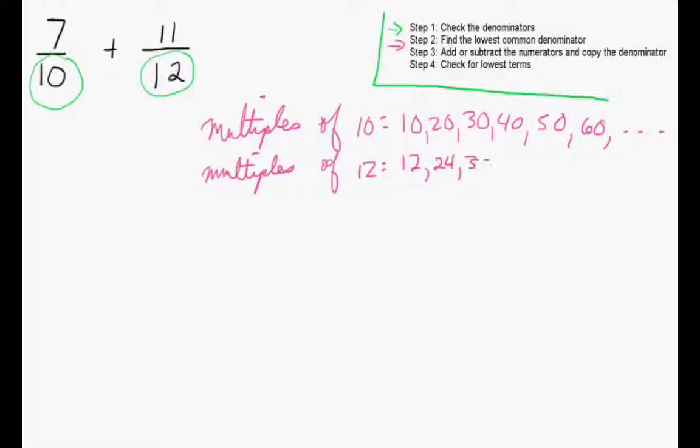And the multiples of 12 are 12, 24, 36, 48, 60, and so on. And we can see that 60 is common in both lists. So that's going to be our lowest common denominator. We're going to rewrite these fractions with 60 as our new denominator.